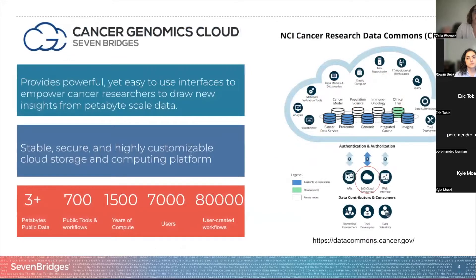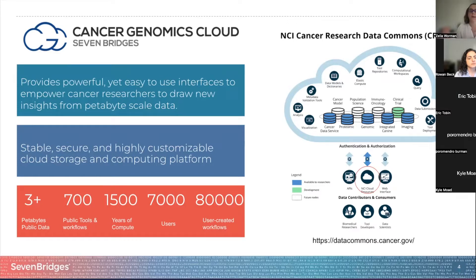The Cancer Genomics Cloud is powered by Seven Bridges and is a cloud platform that allows you to analyze cancer data where it lives. It uses the computational speed of the cloud, which means that an analysis that could usually take you one weekend to run on your computer could be completed in 10 minutes in the cloud. We provide a powerful yet easy interface to empower cancer research to draw new insights from petabyte-scale data.